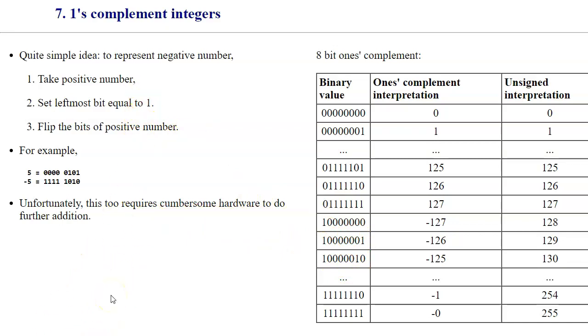The drawback of one's complement integers is that making arithmetic operations with them is quite difficult, so it would require quite cumbersome hardware. That would obviously be slower if we put it together to make arithmetic with one's complement integers.